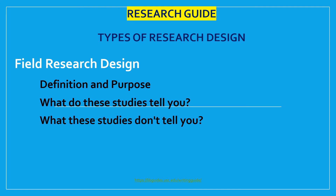The next type is field research design, sometimes referred to as ethnography or participant observation. Field research encompasses a variety of interpretive procedures — observation and interviews rooted in qualitative approaches — to studying people individually or in groups while inhabiting their natural environment. Information acquired from observational research takes the form of field notes documenting what the researcher actually sees and hears in the field. Findings do not consist of conclusive statements derived from numbers and statistics because field research involves analysis of words and observation of behavior. Conclusions are developed from an interpretation of findings that reveal overriding themes, concepts, and ideas.